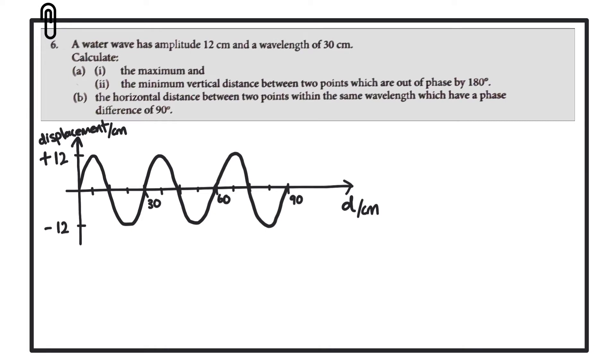That could be between one crest and the next consecutive crest or one trough and the next consecutive trough, or any point in the wave and the same point on the next consecutive wave.